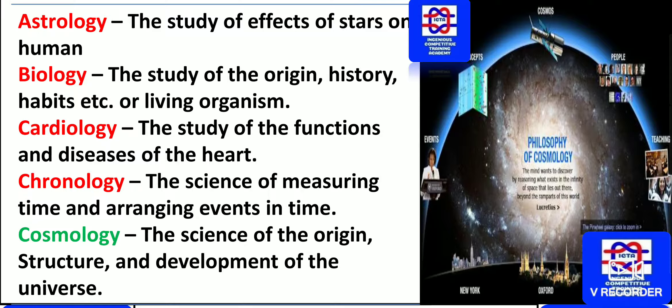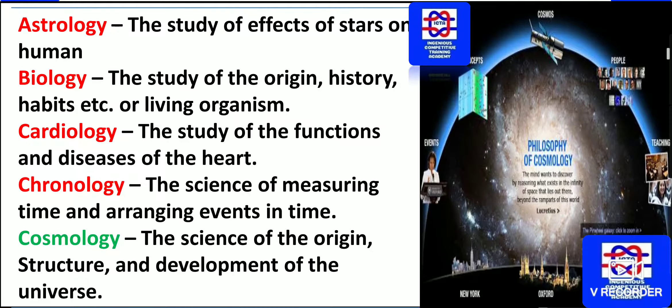Biology is the study of the origin, history, habits, etc. of living organisms. Cardiology means the study of the functions and diseases of the heart. The science of measuring time and arranging events in time is chronology — chrono means time.